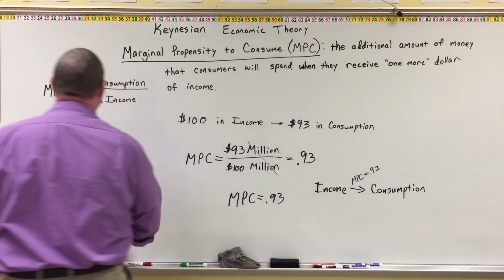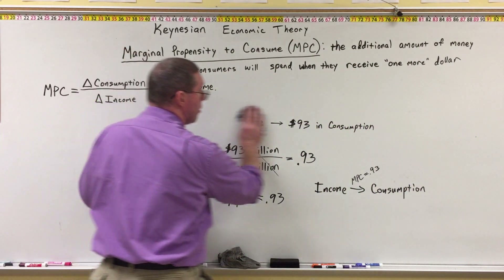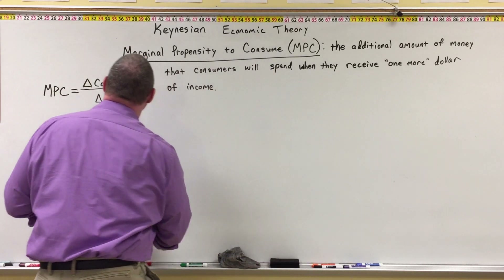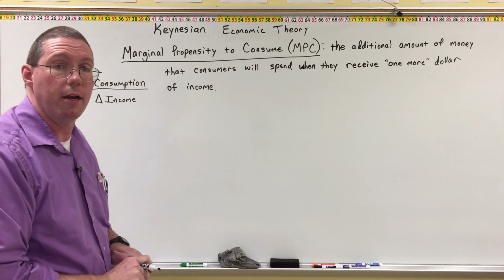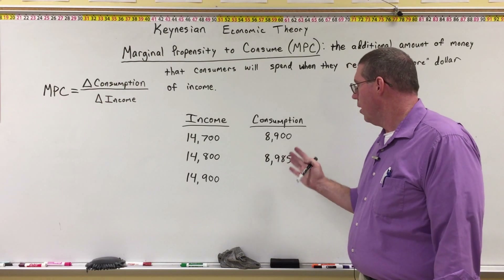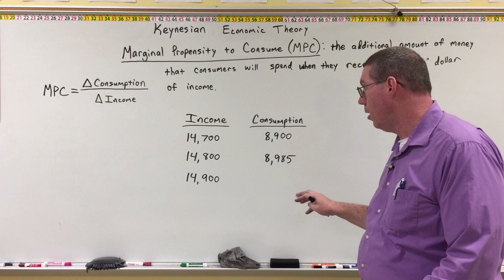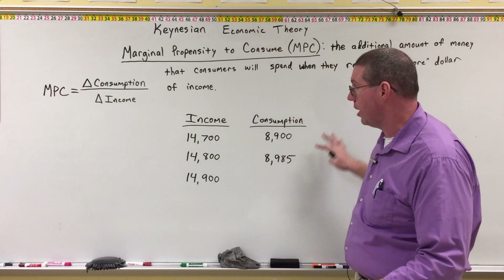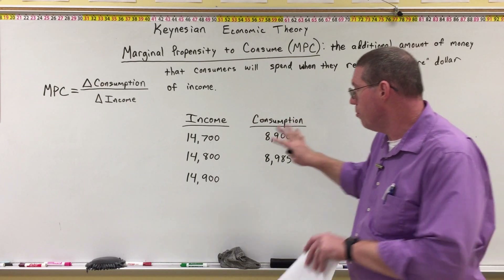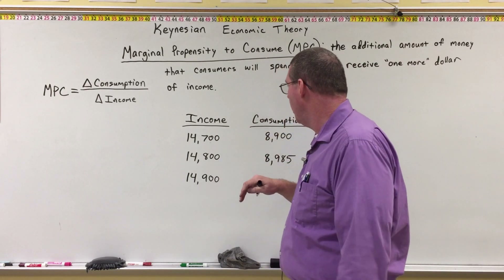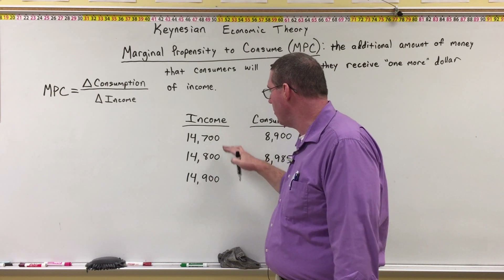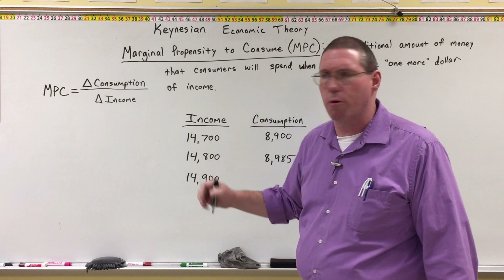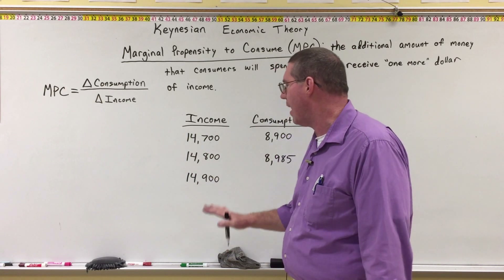Now I want to do a few examples of the marginal propensity to consume to make sure you are able to make calculations using it. Here is a table — just a small table. Later on in another segment, you are going to see a much larger table that includes income and consumption. We are zooming in on a larger table, and we can see that income is going up by a hundred at a time — let's assume that this is in billions of dollars.